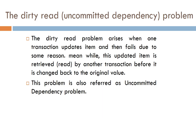Next is the Dirty Read Problem, also called the Uncommitted Dependency Problem. This problem arises when one transaction updates an item and then fails, but meanwhile another transaction has already read the updated — uncommitted — value before it was rolled back to the original. This creates a problem because the second transaction is working with an incorrect, uncommitted value.